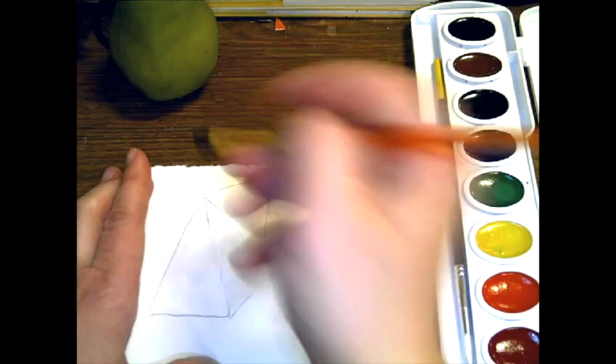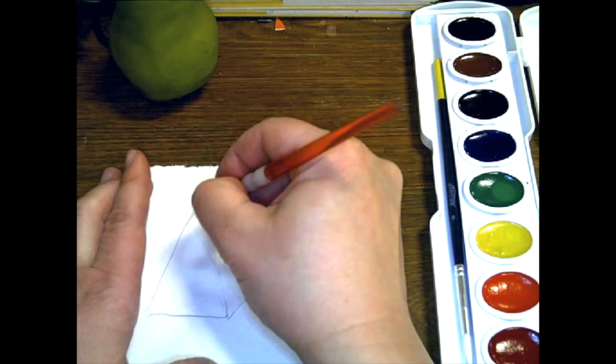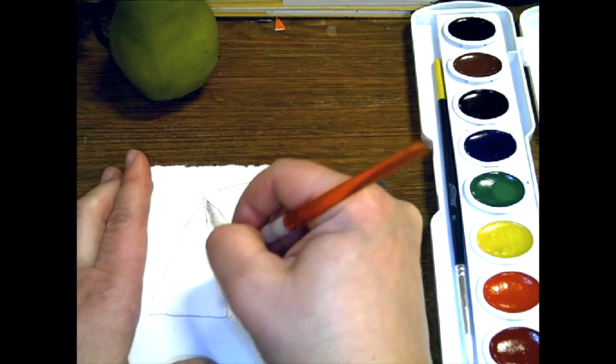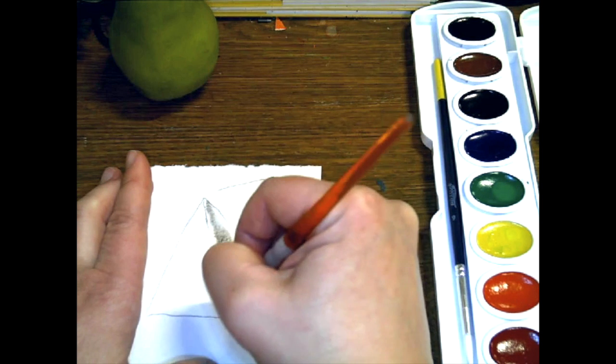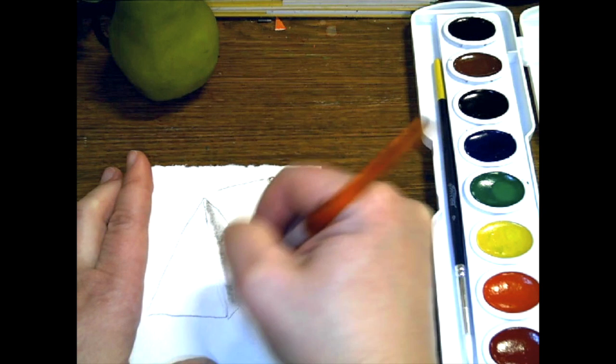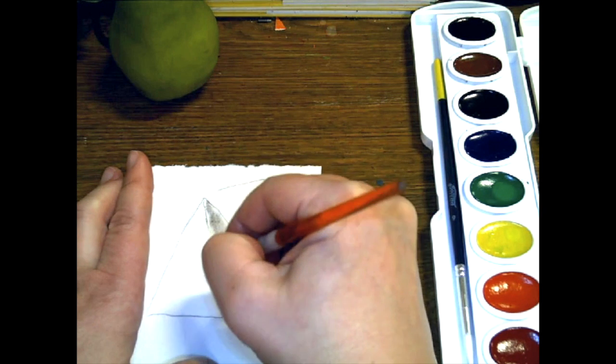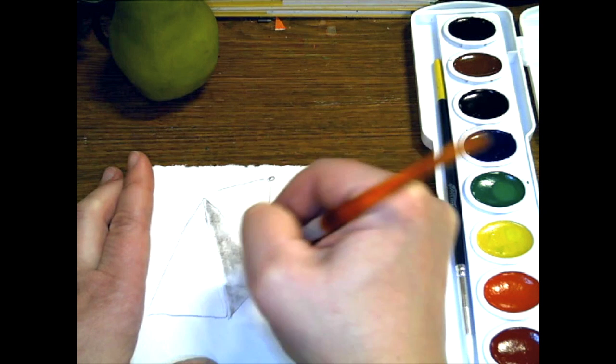And in between that and the pencil line. Now I can grab some of my gray mix that I have over here. And I can pull it out. And what is nice about this way of doing it is that spread of the gray is going to stop where the water stops.